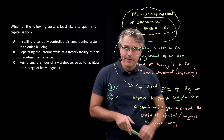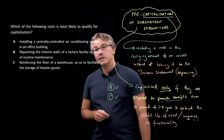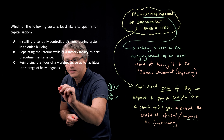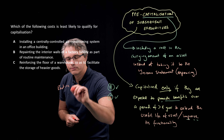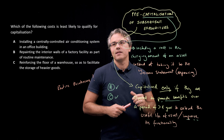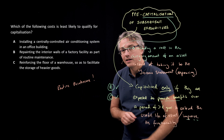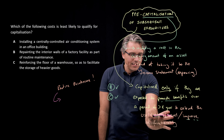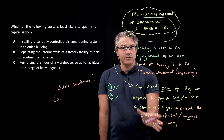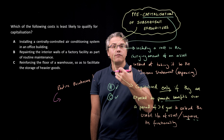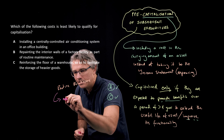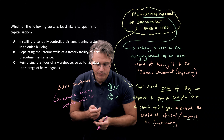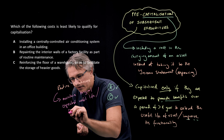However, repainting the interior walls of a factory facility as part of routine maintenance wouldn't qualify. Be careful — whenever you see the phrase 'routine maintenance' thrown into a question, that's a trigger, a warning sign that we're dealing with a cost that's not going to be eligible for capitalization. Routine maintenance, as opposed to some kind of development or enhancement, is only supposed to maintain the original expected useful life or functionality of the asset.